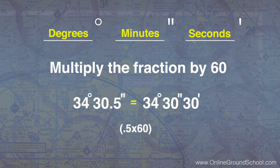But what if you have 34 degrees and 30 minutes 0.5? This would come out to 34 degrees, 30 minutes, and 30 seconds.